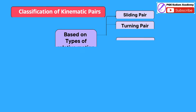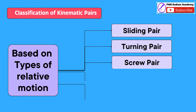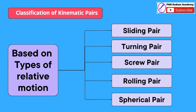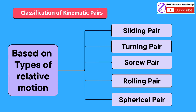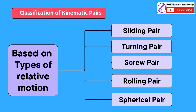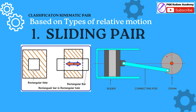First, classification based on type of relative motion. These are further categorized into five parts: Sliding Pair, Turning Pair, Screw Pair, Rolling Pair, and Spherical Pair.